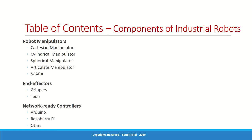This is the content of today's session. We will first talk about manipulators — the different types specifically: Cartesian, cylindrical, spherical, articulate, and SCARA. Then we will talk about end effectors, specifically grippers as well as tools which are at the end of the robot. Finally we will briefly talk about network-ready controllers such as Arduino and Raspberry Pi. The focus will be on the first two areas: manipulators and end effectors.